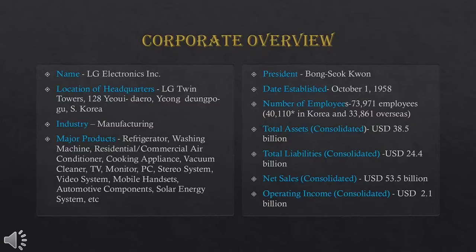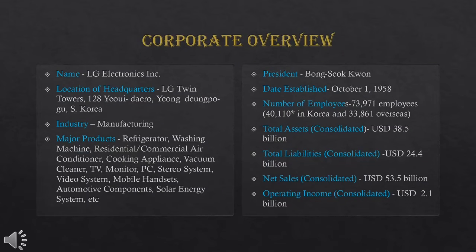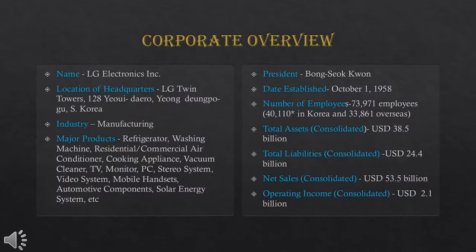The major products of LG include refrigerators, washing machines, residential and commercial air conditioners, cooking appliances, vacuum cleaners, TV monitors, PCs, etc. There are more than 73,971 employees in LG industries. Assets of LG industries total 38.5 billion US dollars, liabilities are 24.4 billion US dollars, net sales are 53.5 billion US dollars, and operating income is 2.1 billion US dollars.